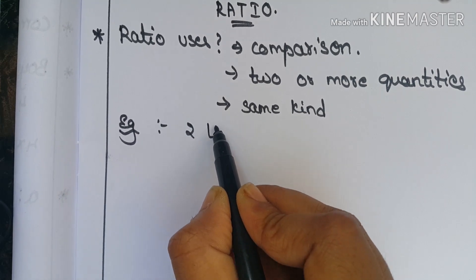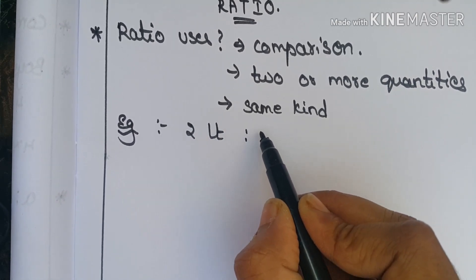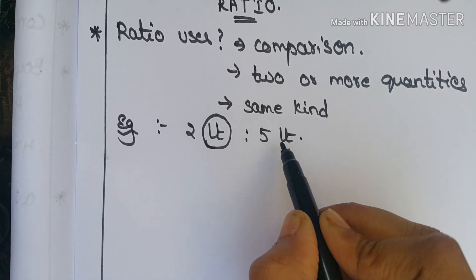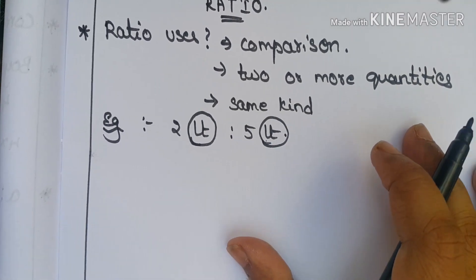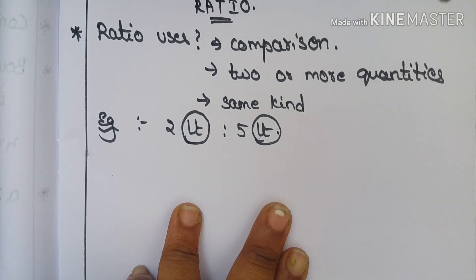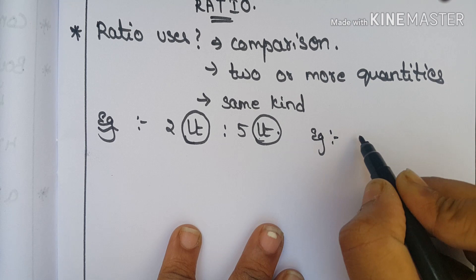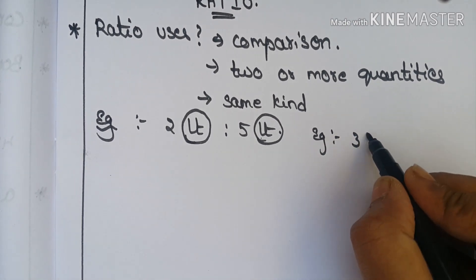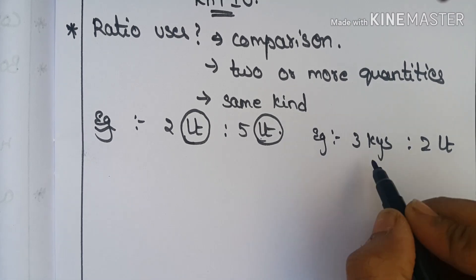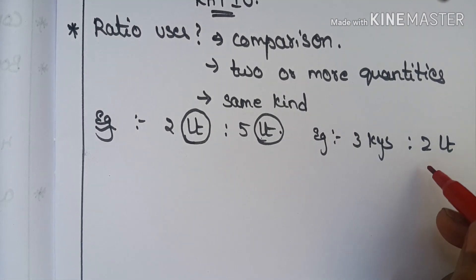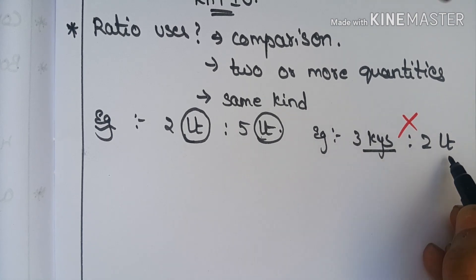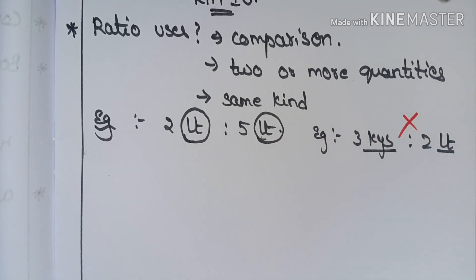For example, two liters compared to five liters — that comparison is valid. But suppose three cages compared to two liters — that comparison cannot be made, because they are not the same kind.